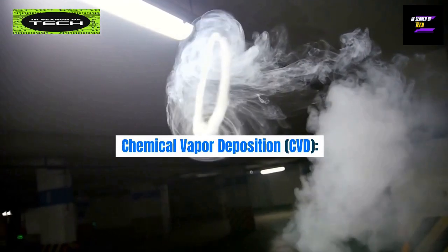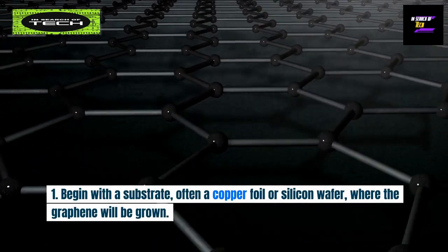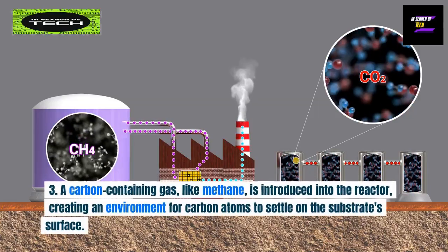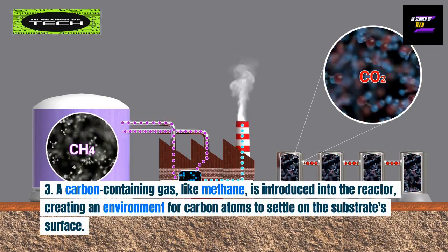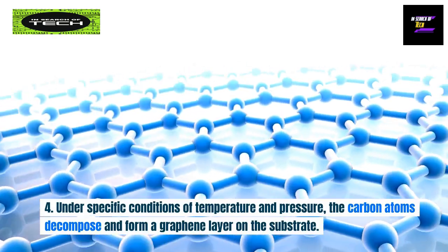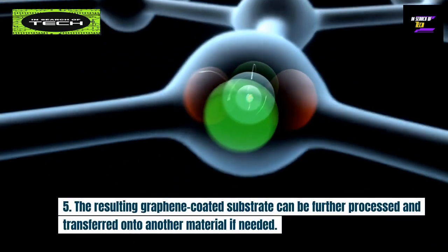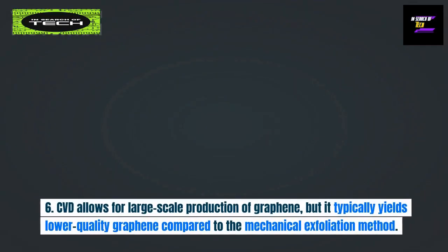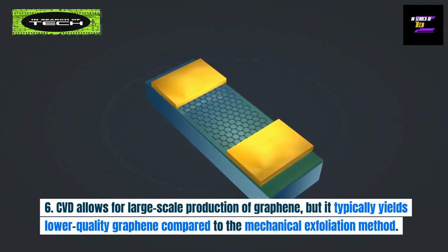For chemical vapor deposition (CVD): begin with a substrate — often a copper foil or silicon wafer — where the graphene will be grown. The substrate is prepared by cleaning and heating it in a furnace or reactor. A carbon-containing gas, like methane, is introduced into the reactor, creating an environment for carbon atoms to settle on the substrate's surface. Under specific conditions of temperature and pressure, the carbon atoms decompose and form a graphene layer on the substrate. The resulting graphene-coated substrate can be further processed and transferred onto another material if needed. CVD allows for large-scale production of graphene, but it typically yields lower-quality graphene compared to the mechanical exfoliation method.